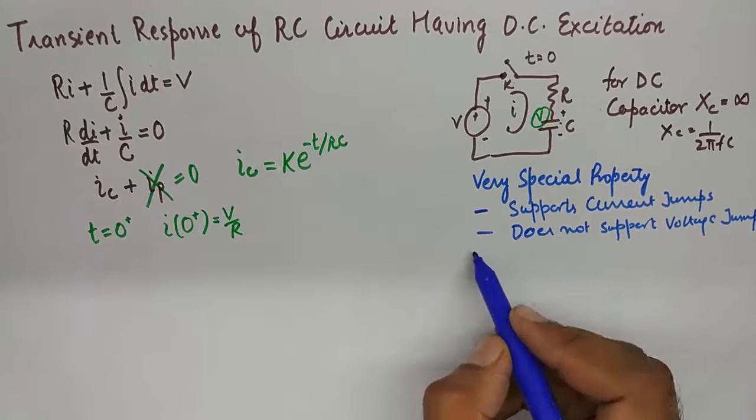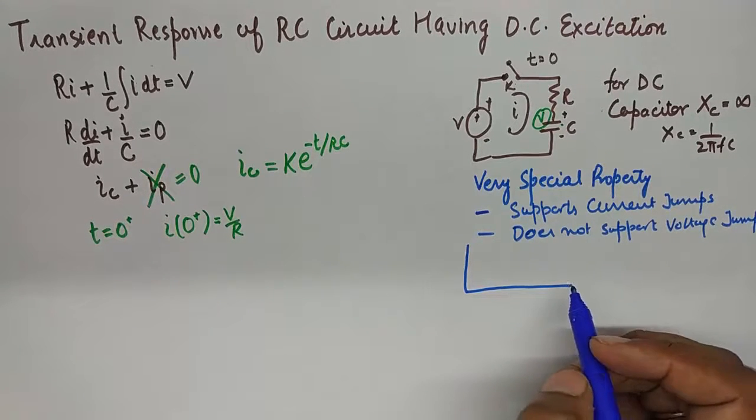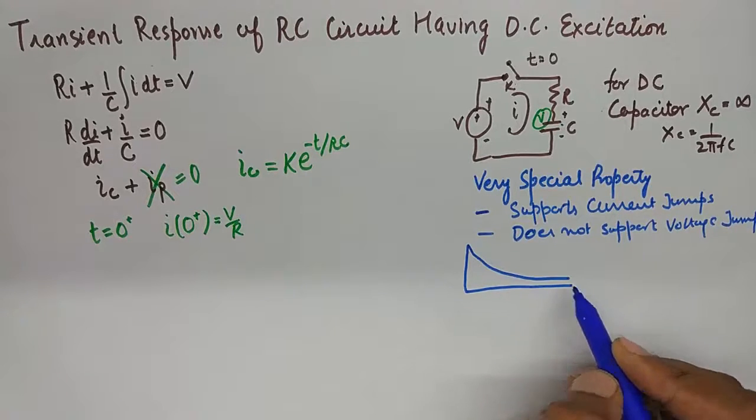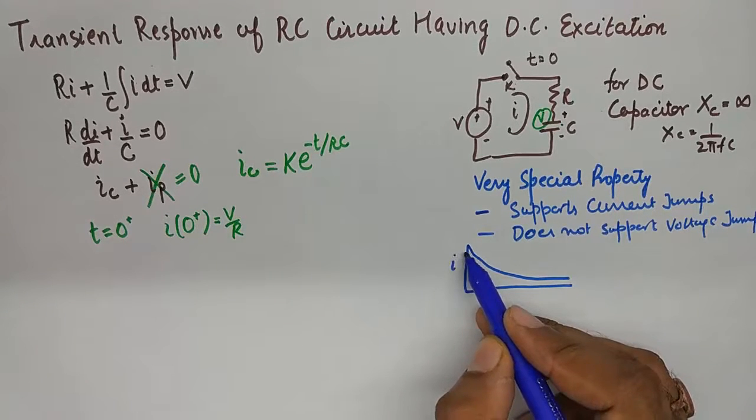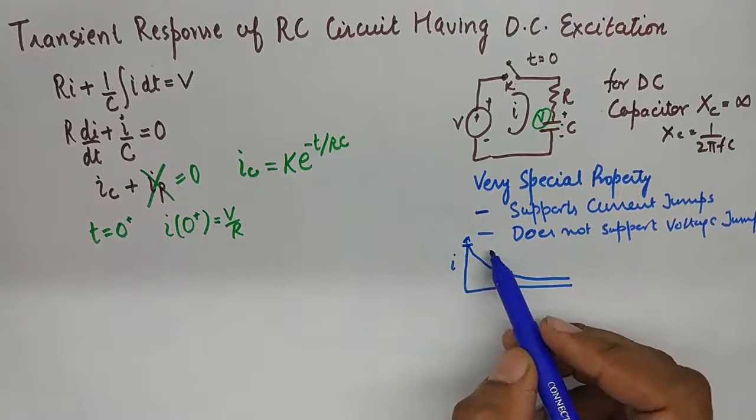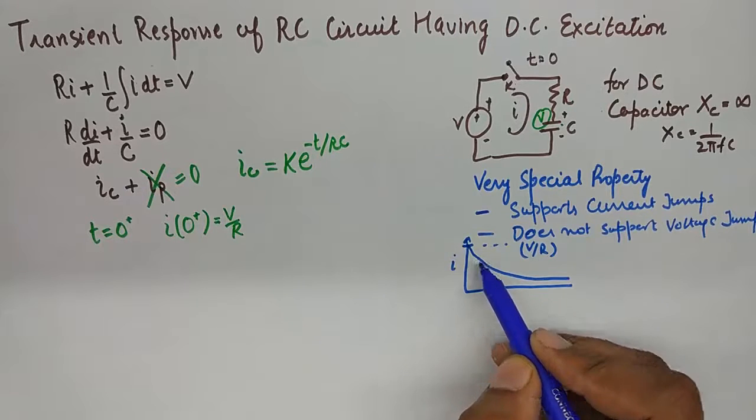So in other words if we were to draw the profile of current in RC charging circuit that will be something like this. The current will be maximum V/R. This is the maximum current V/R at time t equals 0.